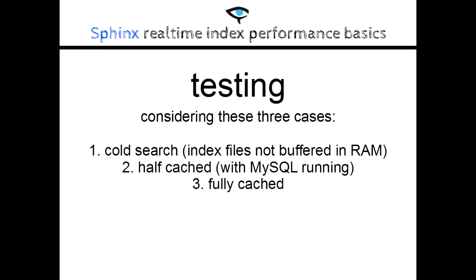We considered three cases: a cold search, where index files were not buffered in RAM by the operating system; a half-cached case, where MySQL was also running, so it was possible to buffer only around half the disk files; and a fully-cached case, where we forced the buffering of the files in RAM.